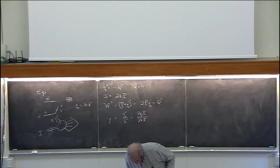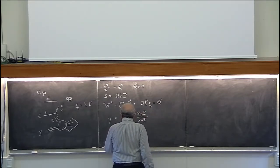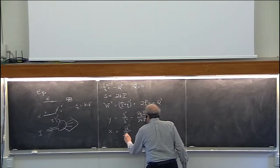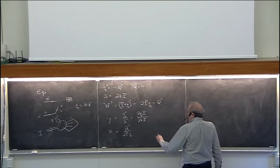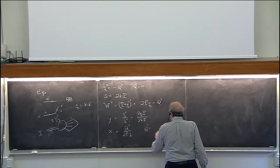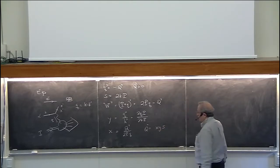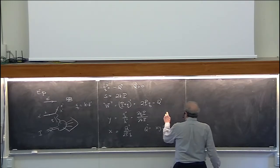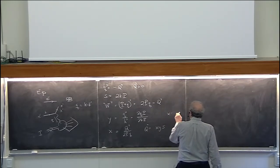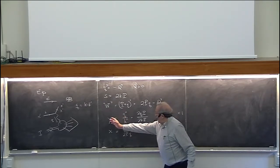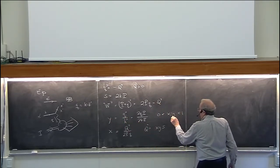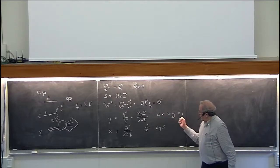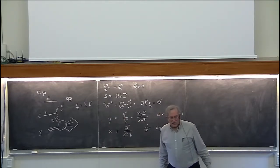Finally, there's one more invariant which is very useful: a quantity called X, which is the ratio Q squared over 2P dot Q. With everything I've written, you can see that Q squared equals X times Y times S. W squared is positive, so X is a quantity between zero and one. This energy fraction Y is also between zero and one. Very conveniently, we have two Lorentz-invariantly defined variables living between zero and one that characterize the general kinematics of this process.